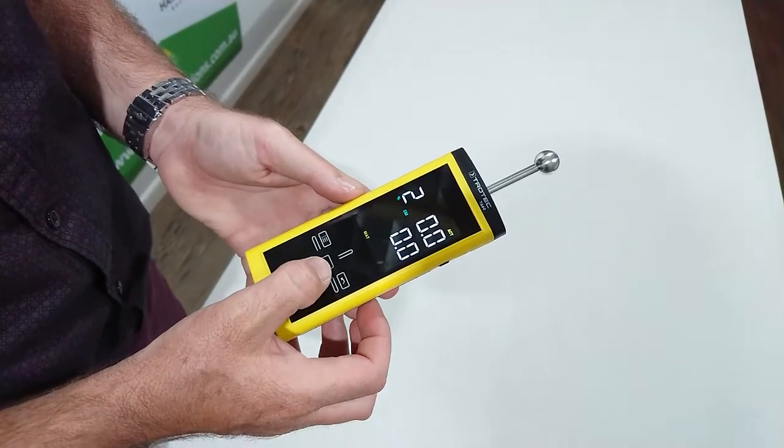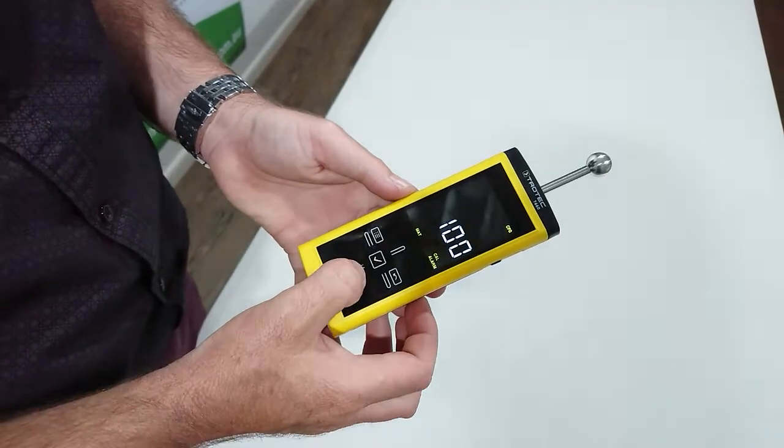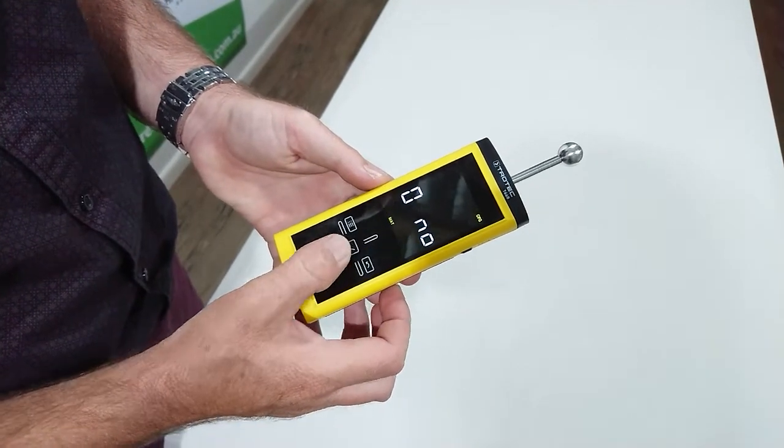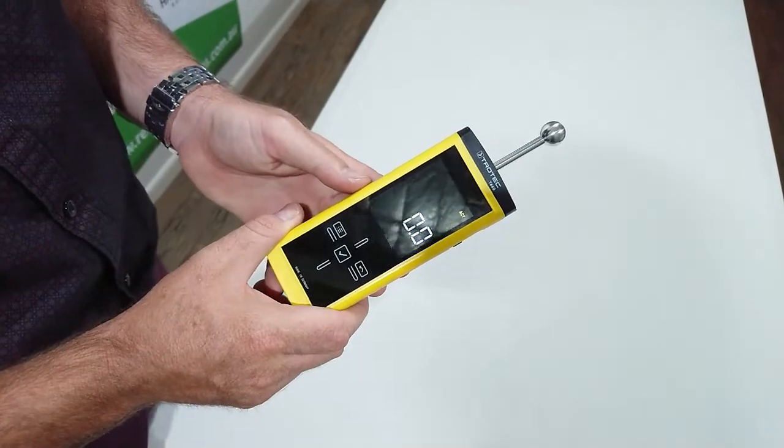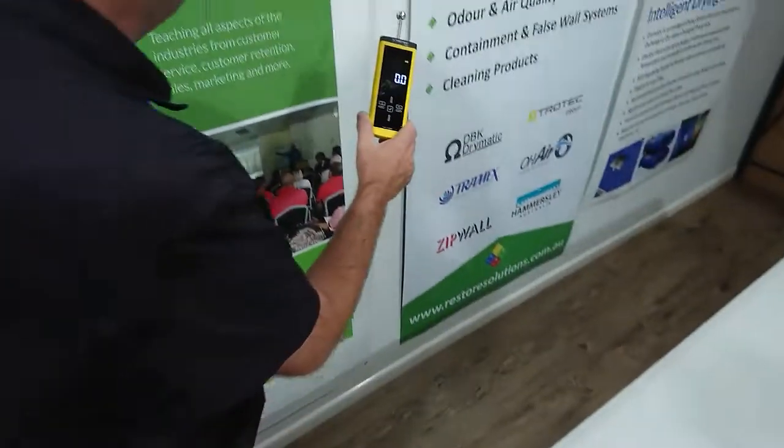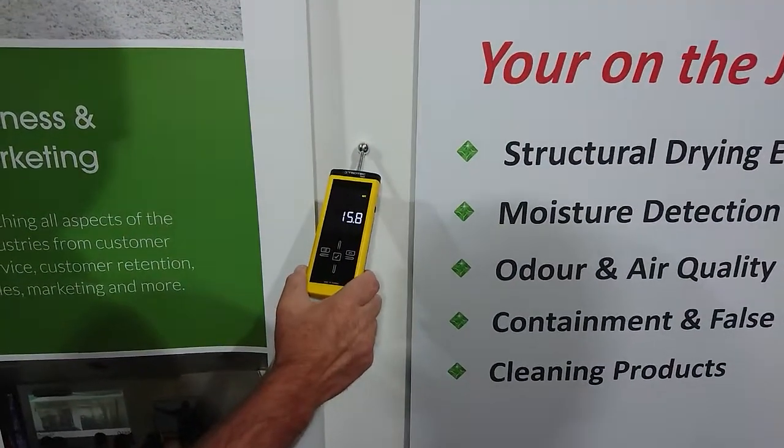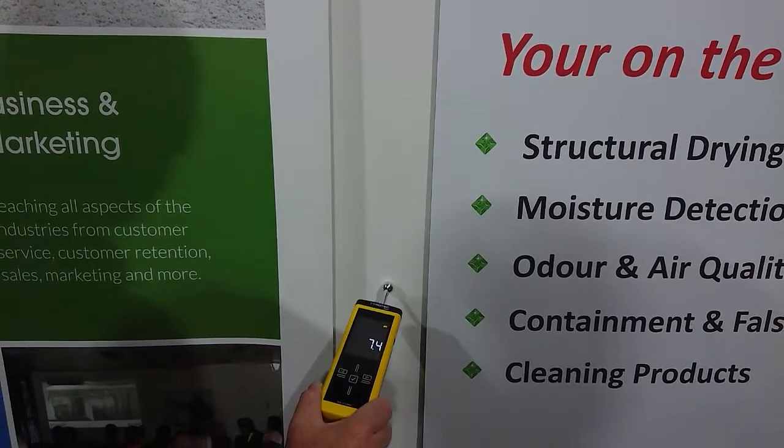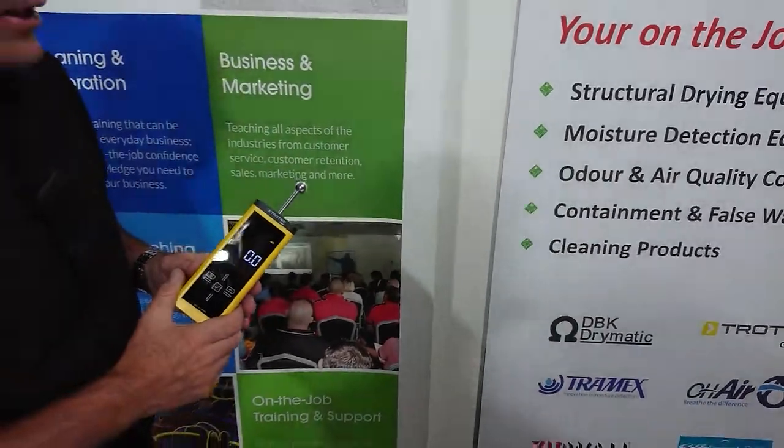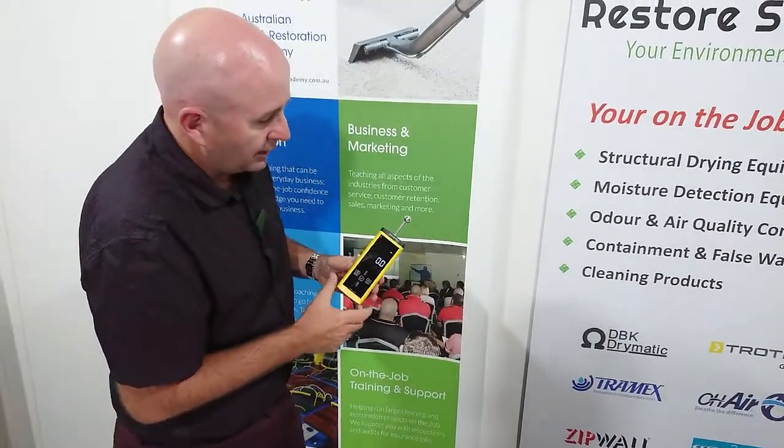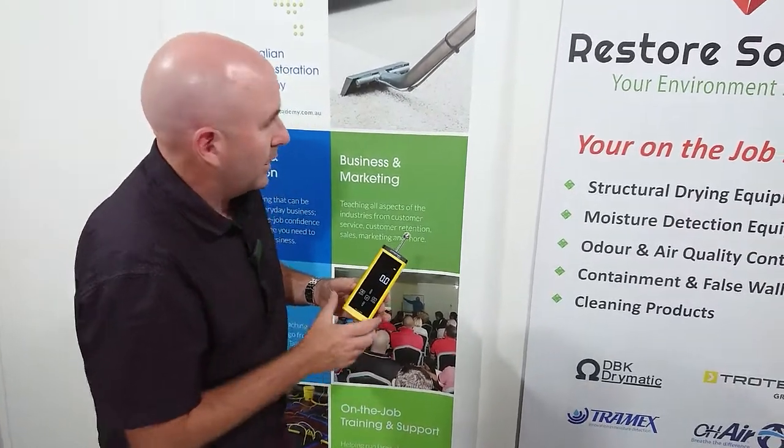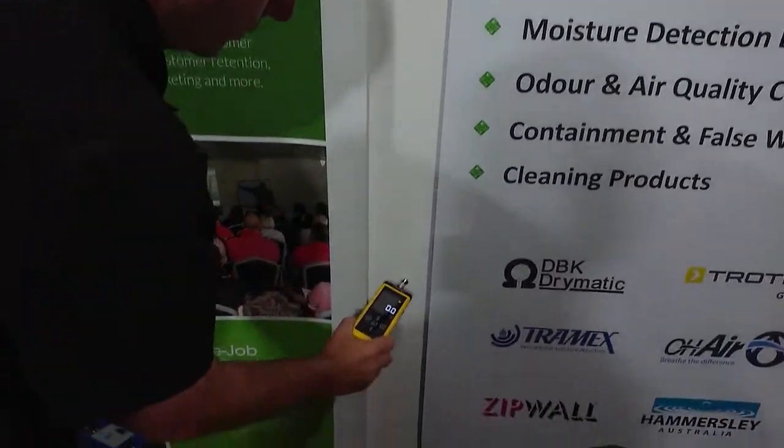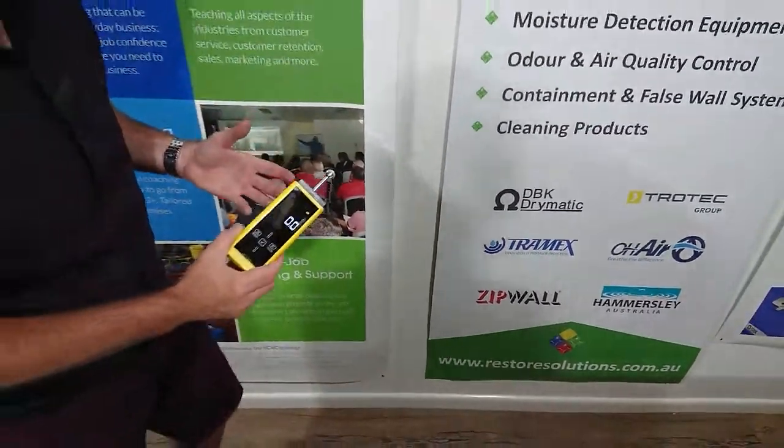So what we're going to do is go back from there and we'll go into the building materials. With the building materials it's a relative scale. So I'm just going to show you on this wall over here. We've got a reading and people say what does that reading mean? So it's all relevant, it's a relevant scale reading. What you've got to do is go find a dry area with that meter. So in our dry area we're reading eight, nine, eight, so we're getting a rough average between eight and nine.